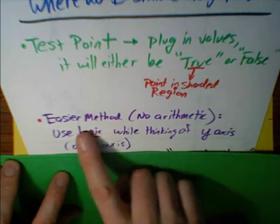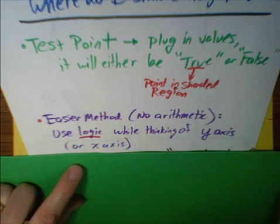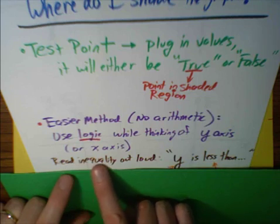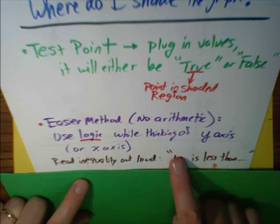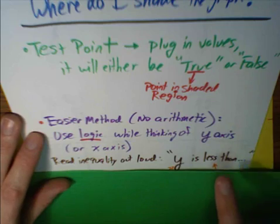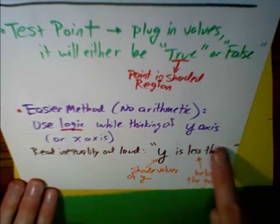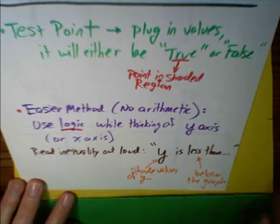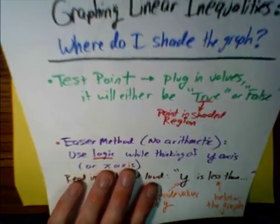Essentially, we're going to be asking ourself, well, the y-axis goes up and down, and it may say something like y is less than. So we're going to read the inequality out loud. In other words, we want values of y that are smaller than the graph we just made. We're going to shade values of y below the graph. So this would tell us to shade below the graph. I actually prefer this method, although we're going to do a test point method first.